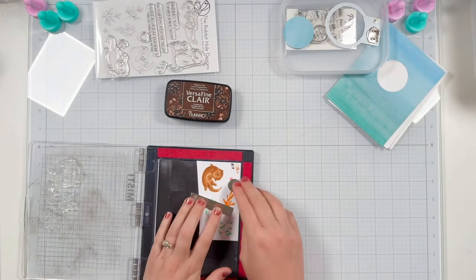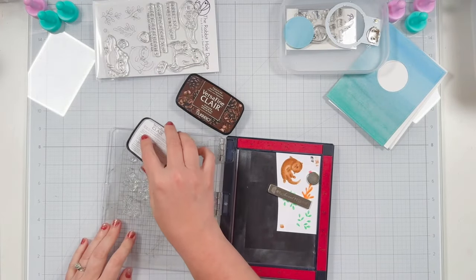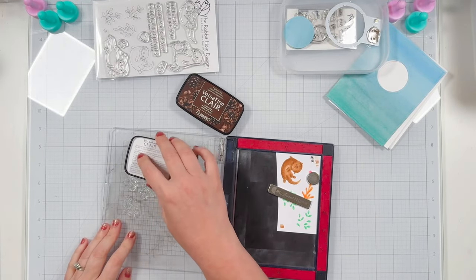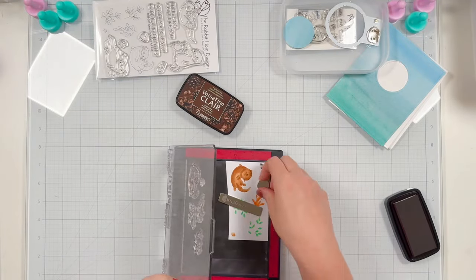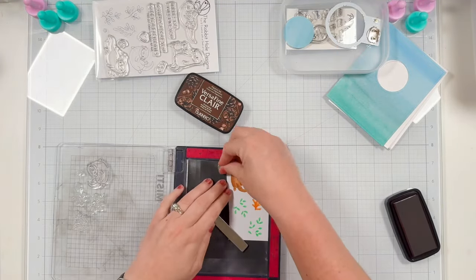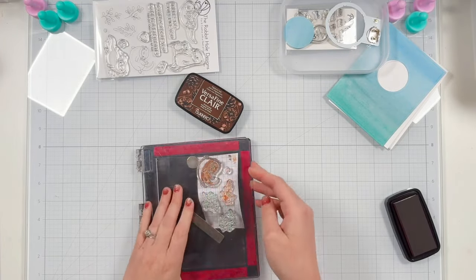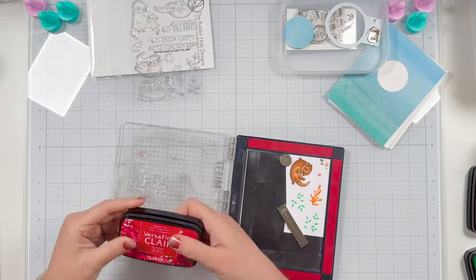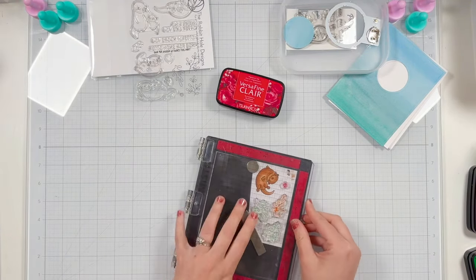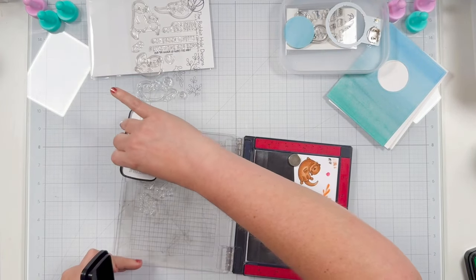So I'm going to start with inking up just the sea otter with that pine cone VersaFine Clair ink so my sea otter can be brown. I'm going to realize here that I put my magnets where they're stamped so I'm just going to readjust here and I'm going to stamp my sea otter in that brown and then I will clean it off and remove it from the Misti. Now I'm going to stamp my little shell in pink and I'll do this again for the coral this time in orange.